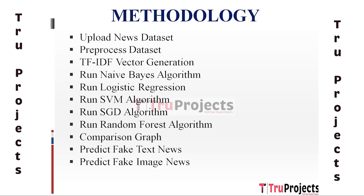The tenth module is Predict Fake Text News. The trained models — Naive Bayes, Logistic Regression, SVM, SGD, and Random Forest — are used to predict whether new, unseen text news articles are fake or real. The pre-processed and TF-IDF transformed features of these new articles are fed into the models and each model generates its prediction.